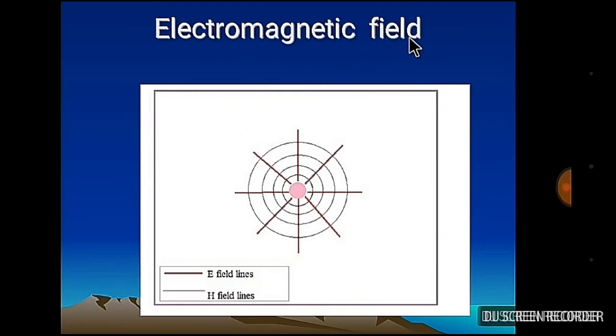Electromagnetic field. This diagram shows whenever signal or current is passing through wire, it creates electromagnetic field around the wire. Black circular lines show the magnetic field going outward in circular ways, and red lines show the electric lines going outward in perpendicular ways. Combined, it's called electromagnetic field. It is negligible in power cable because it works at 50 hertz frequency.